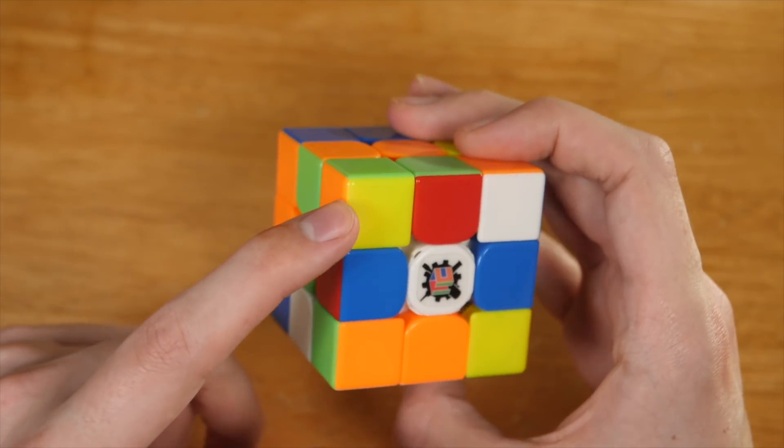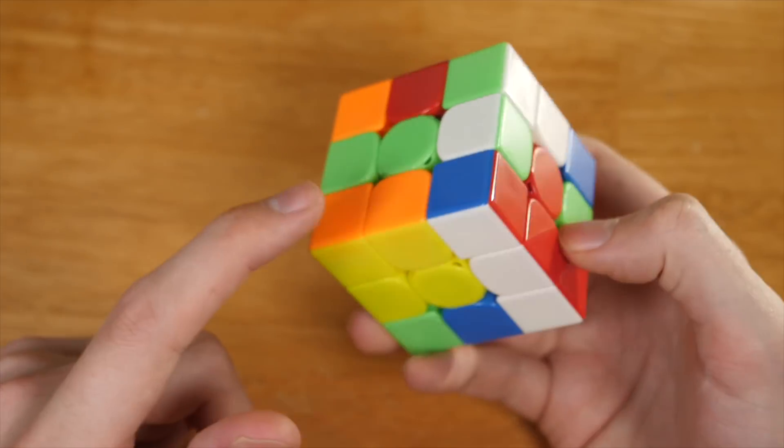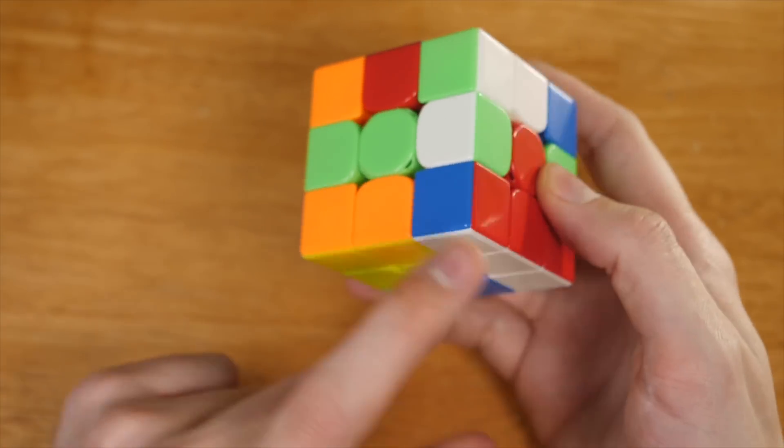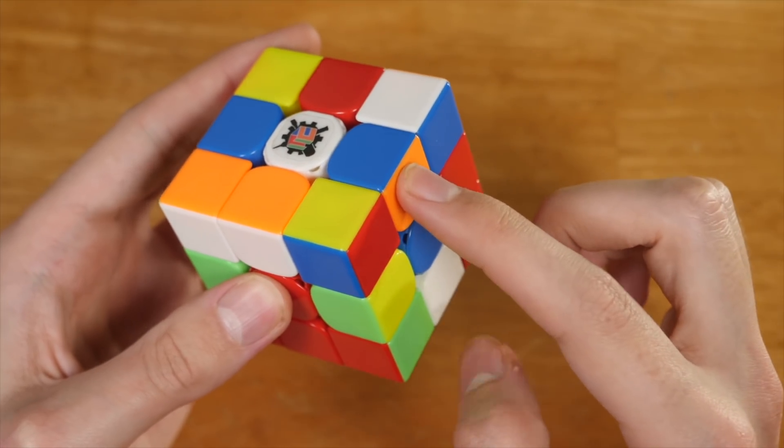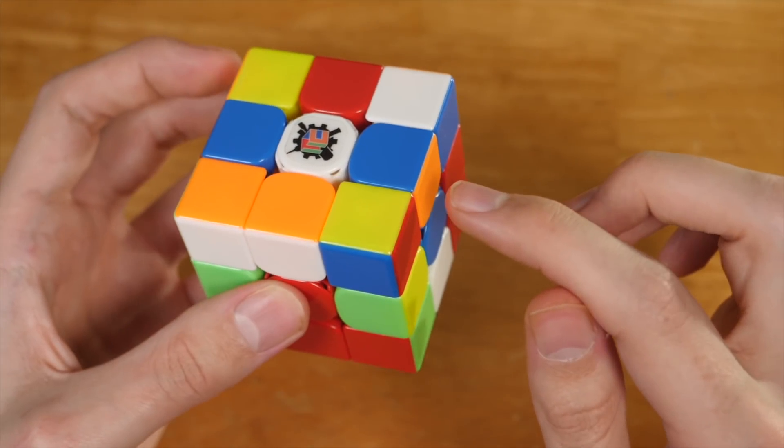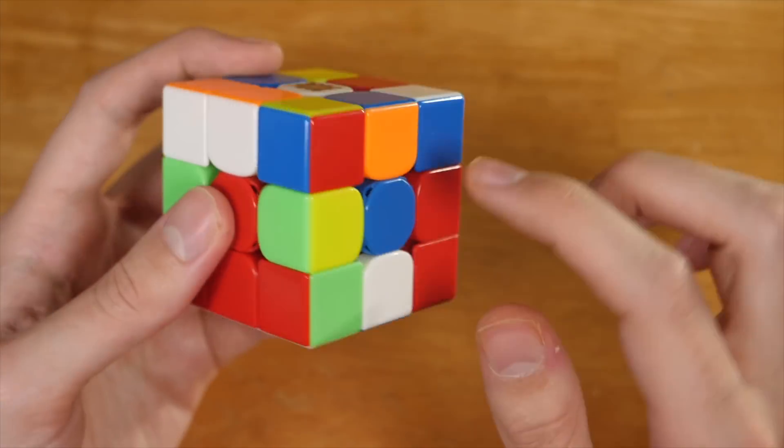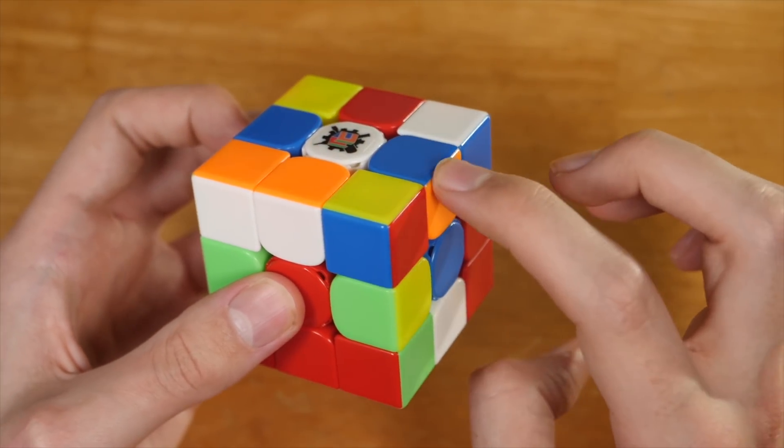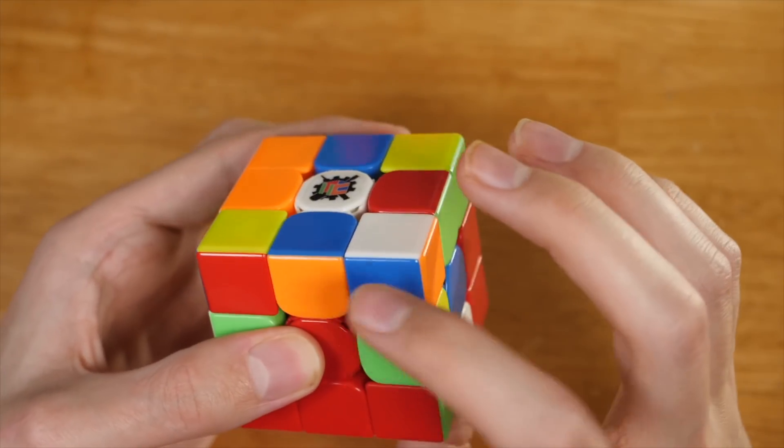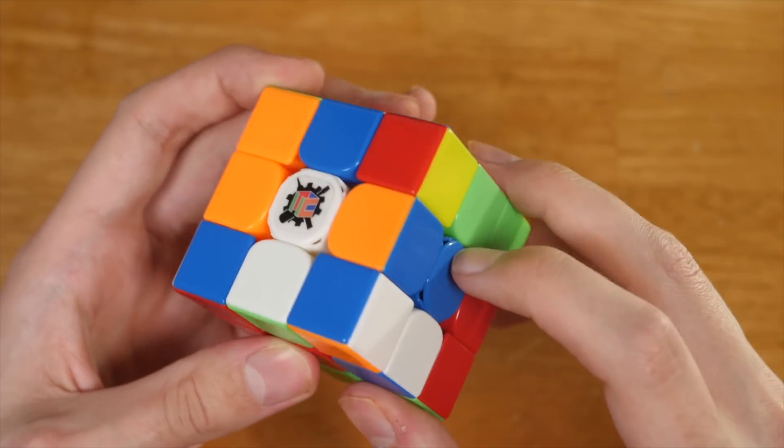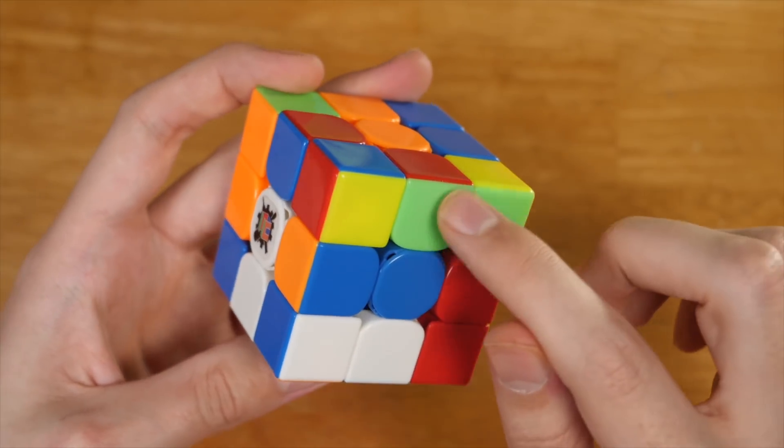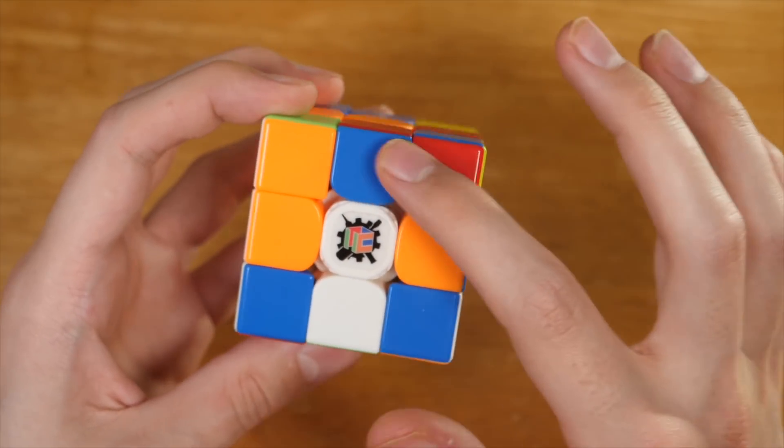Notice how this corner and this edge belong right here with this edge, which is a D away. Also notice that this edge is here, so while solving the rest of the cross, he's going to set up this edge to be inserted into the back. And notice that while he solves this edge and these cross pieces, preserving this corner, he's not messing up this block and he paired up these two.